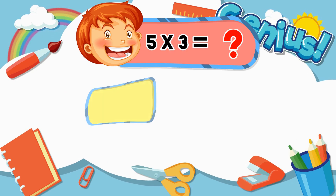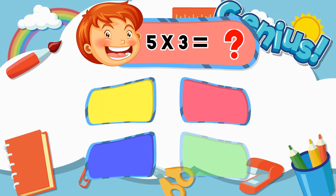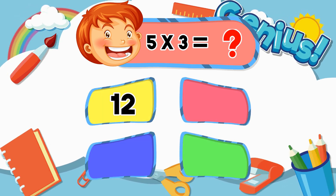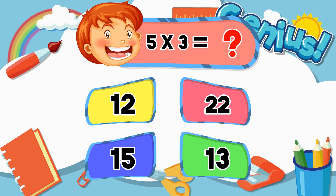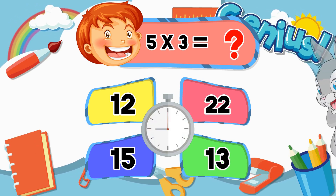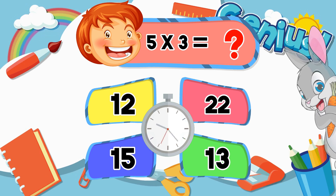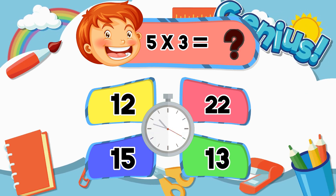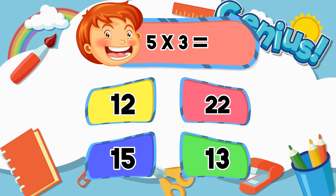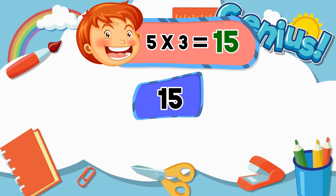What is 5 times 3? 12, 22, 15, 13. Answer: 15.